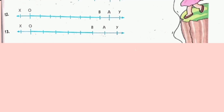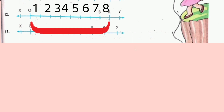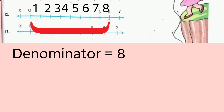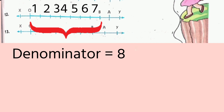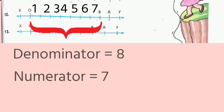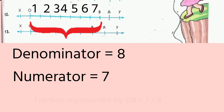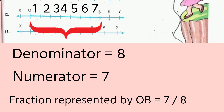Let us move on to question number 12. Again, the number line is there. On this number line, point O and point A are there. Let us find out in how many parts OA is divided: 1, 2, 3, 4, 5, 6, 7, 8. So 8 will be our denominator as OA is divided into 8 equal parts. Out of 8 equal parts, how many parts are represented by OB? 1, 2, 3, 4, 5, 6, 7. So the numerator will be 7. Therefore, the fraction represented by OB on this number line is 7 by 8.